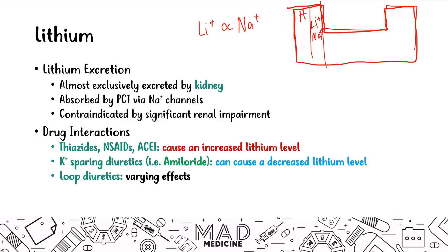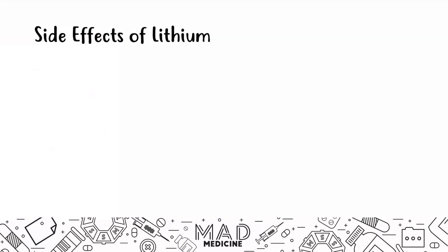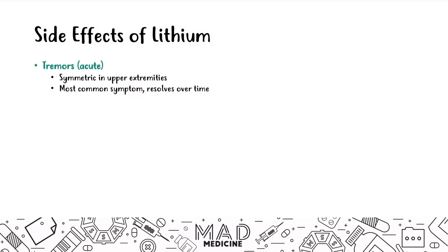Now let's talk about the side effects of lithium. There are several side effects — both in adults and in fetuses — that you need to understand for Step 1. The simplest side effect is tremors, which usually happen symmetrically in the upper extremities. This is the most common symptom and ends up resolving over time — it's an acute side effect. That is the only acute side effect you need to know; the rest are long-term side effects.